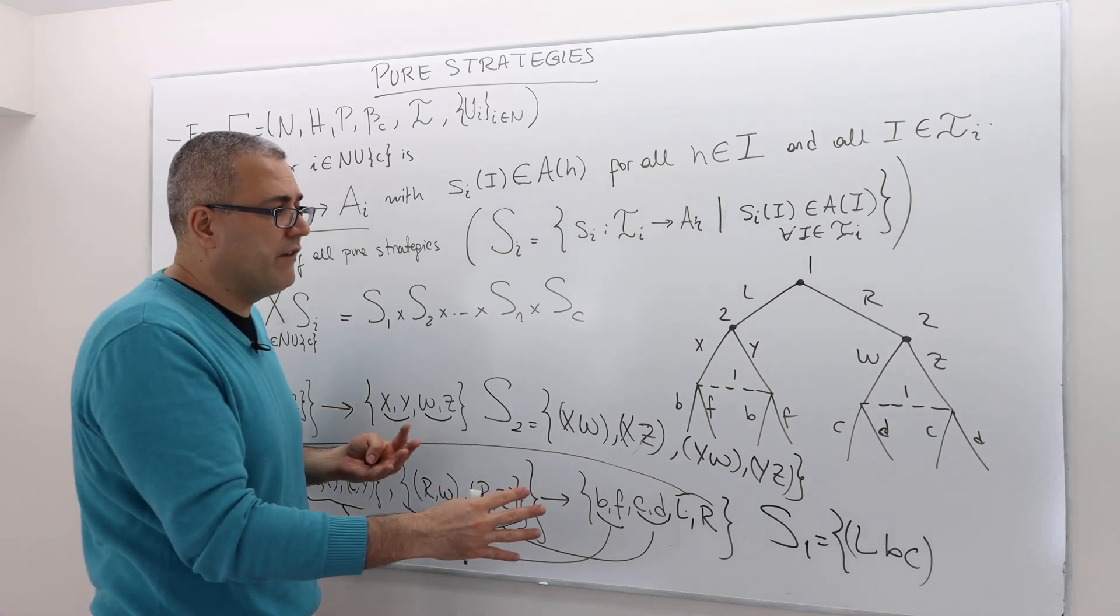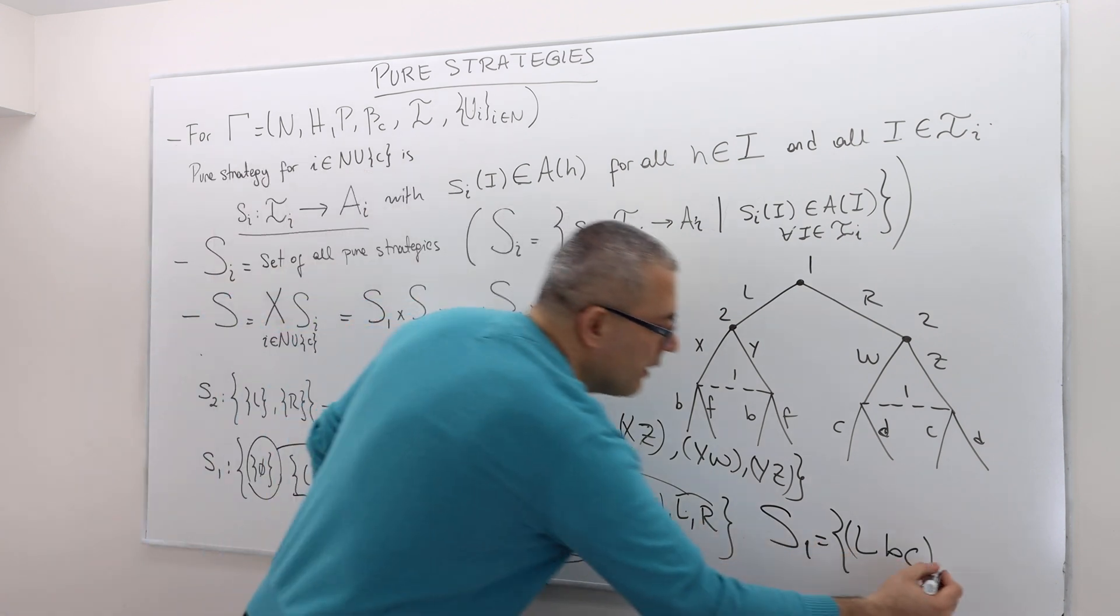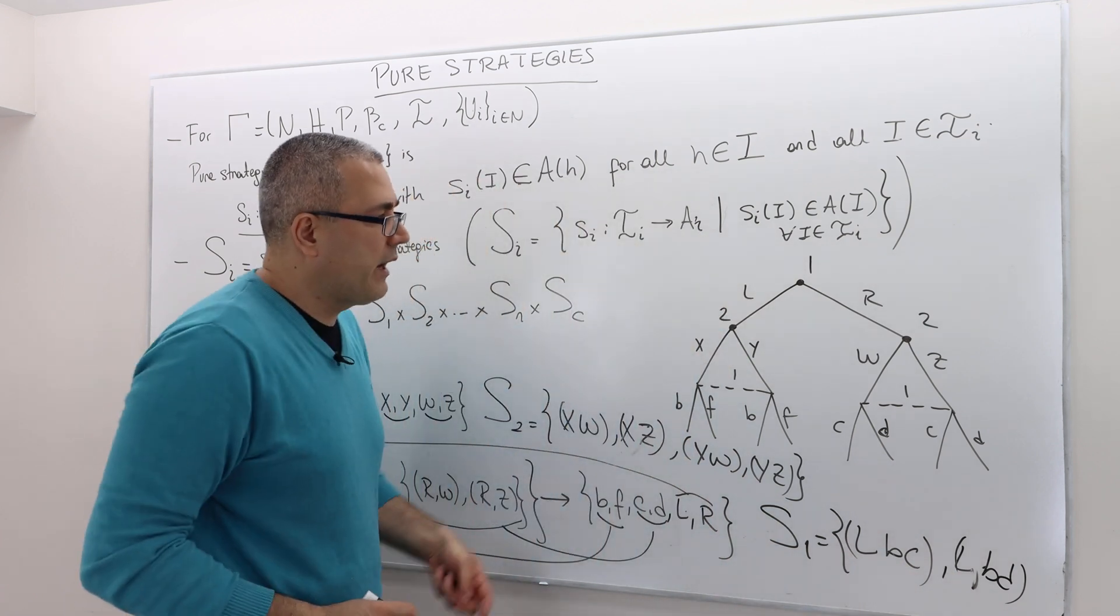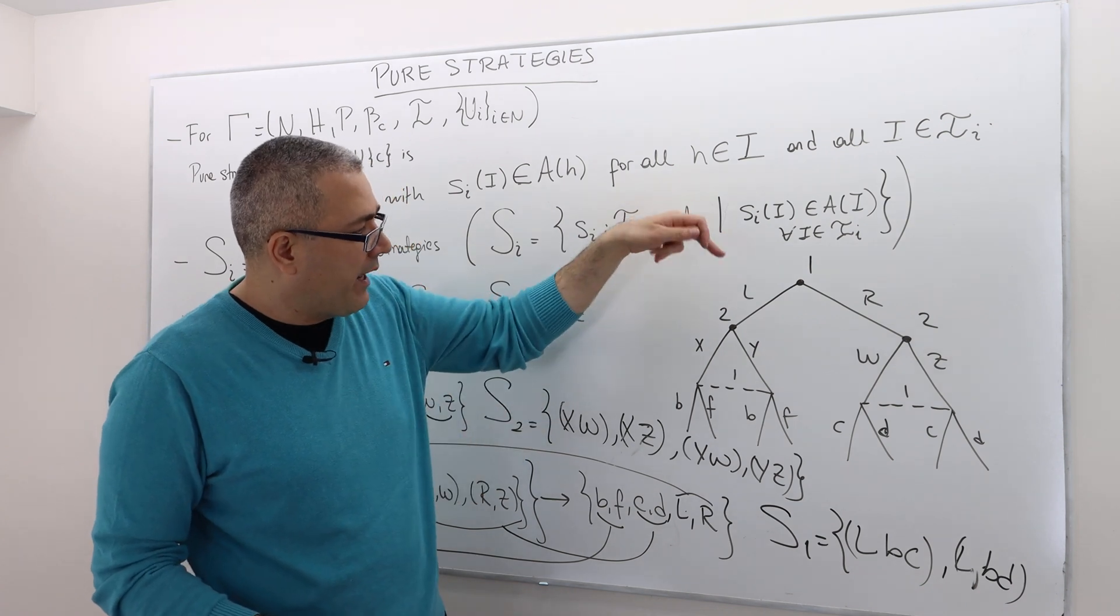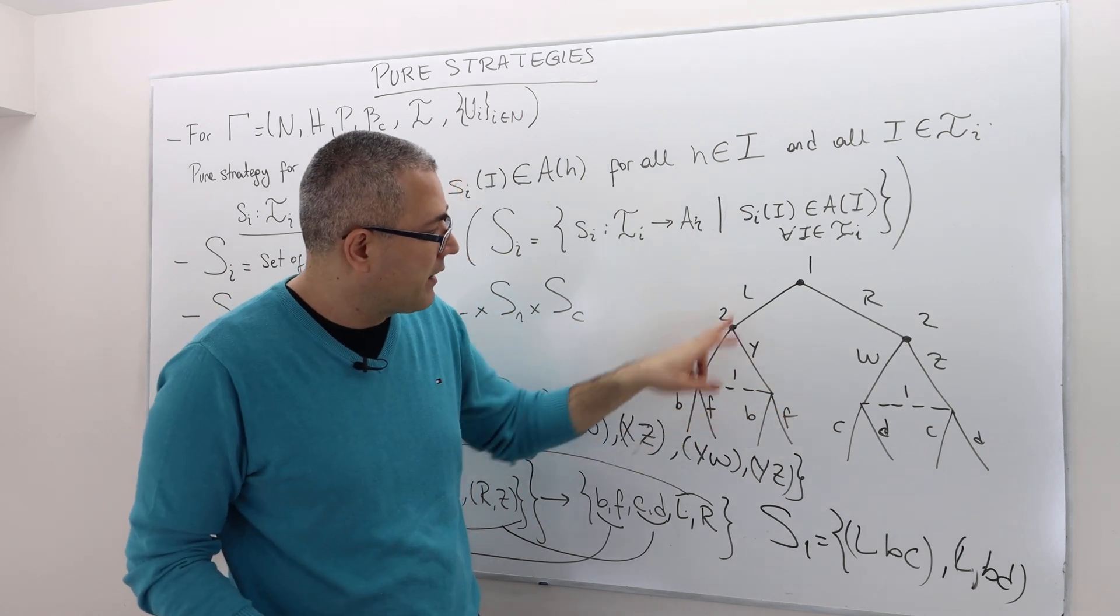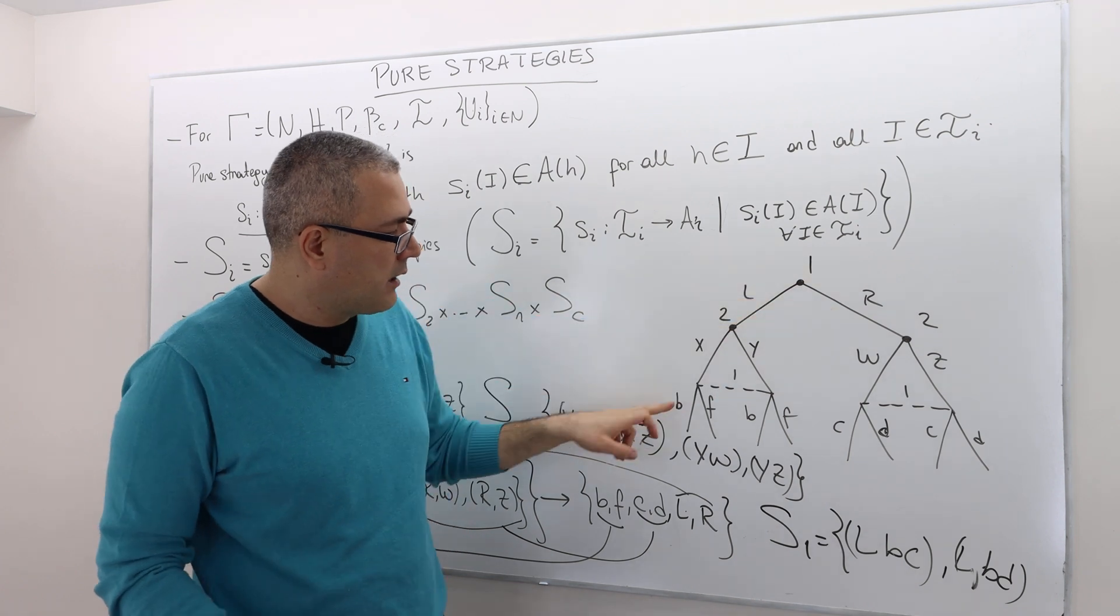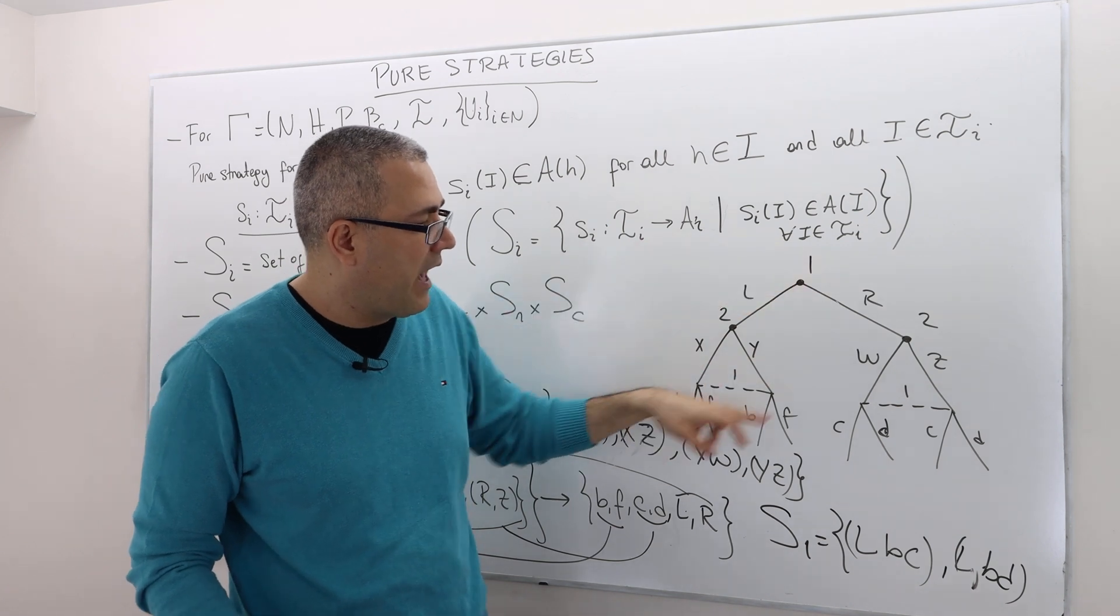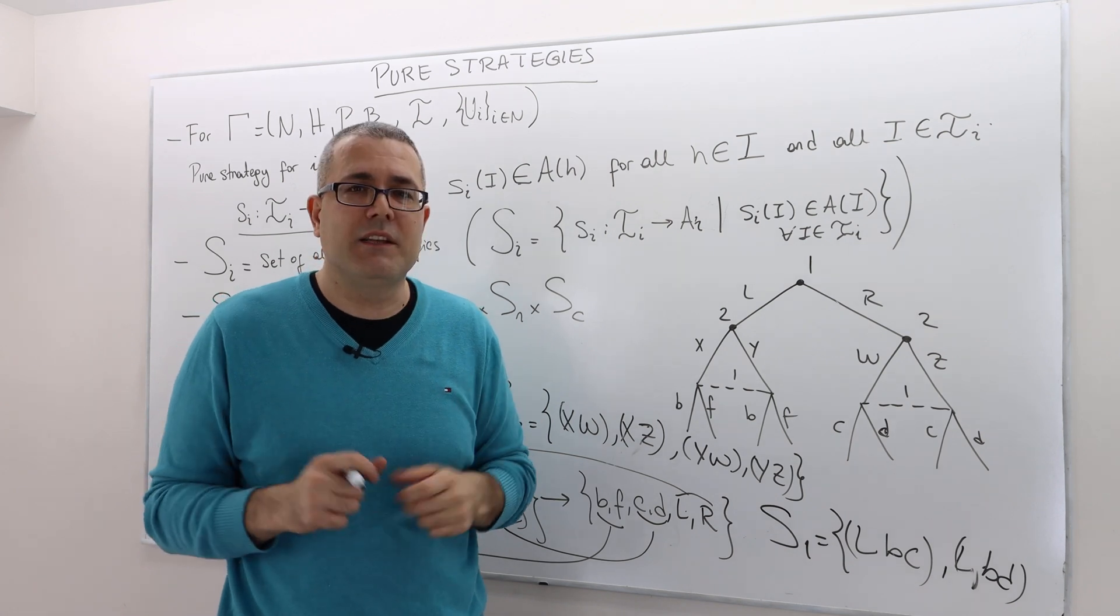Well, this is not just the only strategy available for player one, obviously. There's a bunch of other combinations. For example, L, B, and D. What else? I'm not going to write, but there's going to be eight strategies for player one. What else? L, F, C, L, F, D, and then R, B, C, R, B, D, and then the other two, R, F, C, and R, F, D. So there are eight total strategies for player one. That's it.